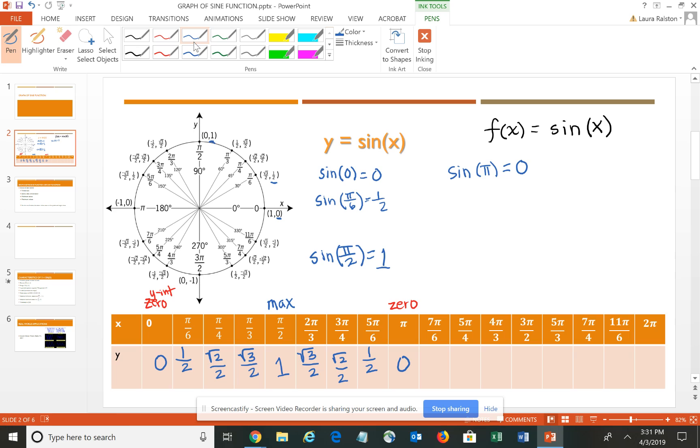I'm going to continue the revolution. So now I'm down to 7 pi-sixths. I'm in the third quadrant and my sine, which is the y-coordinate, is negative one-half. For sine of 5 pi-fourths, I have negative square root 2 over 2. For pi-thirds, the sine or the y-value is negative square root 3 over 2. The sine of 3 pi over 2 would be negative 1.